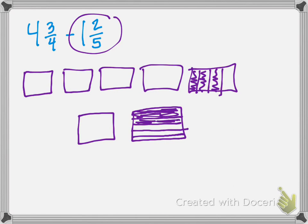And then we're going to give each other the other lines. On the first rectangle we're going to give it 4 lines for 5 sections. And on the second we're going to give it 3 lines for 4 sections. The first rectangle now has 20 sections with 15 colored in, and the second has 20 sections with 8 colored in.